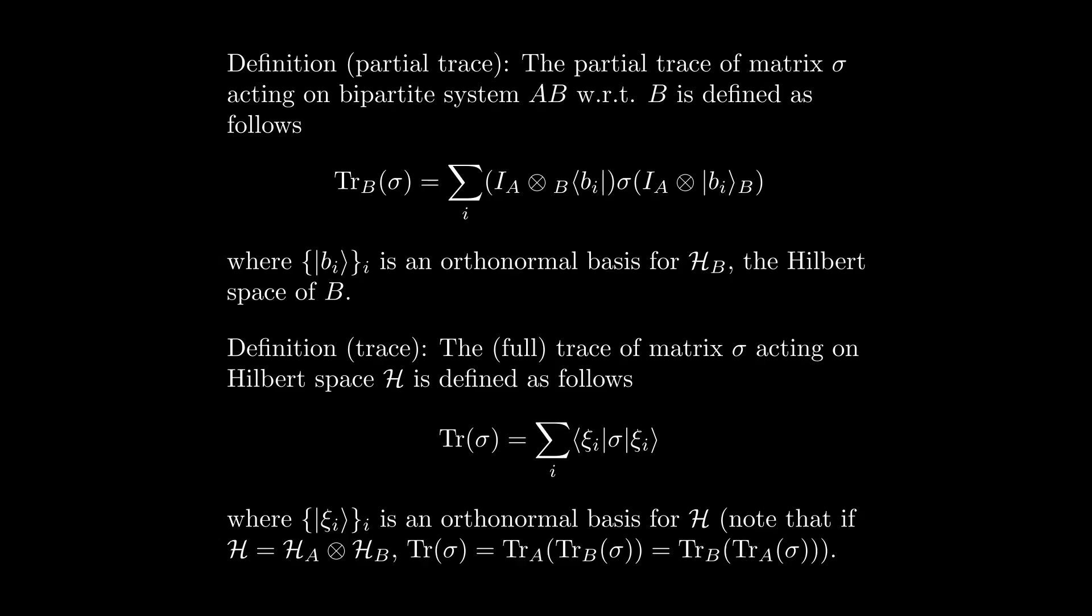The partial trace is effectively identical to this, except rather than summing over every orthonormal basis vector for the whole system, we only sum over those for the system we want to trace out, and the bras and kets we use to sandwich the operator we are tracing are tensored with identities over the subsystems we want to preserve. Functionally, this is also equivalent to finding the probability distribution over pure states of A, in other words, the mixed state that we would get if we measured B and then tossed the measurement outcome.